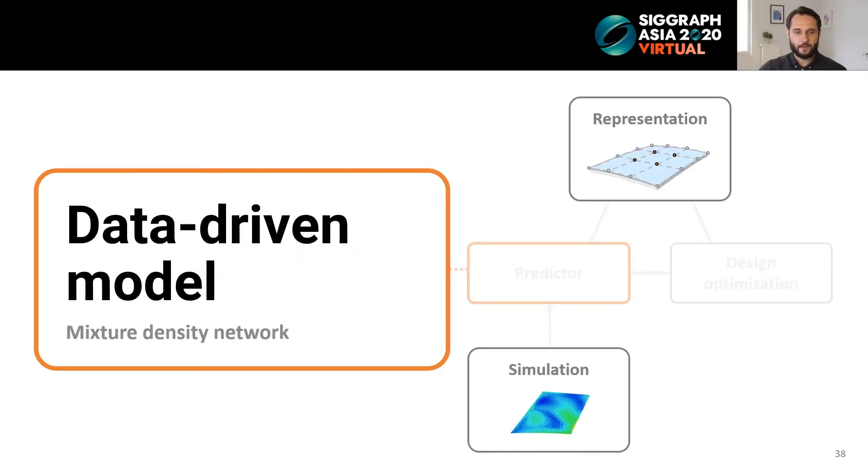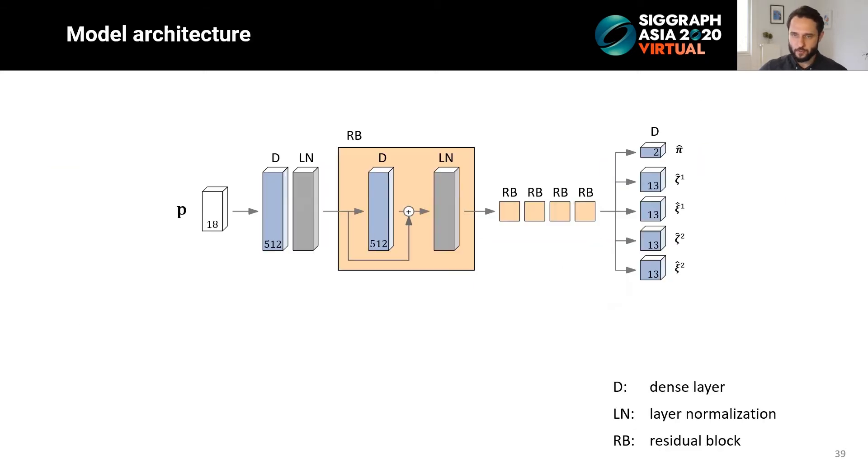Thank you, Ruslan. To accurately capture the design space of cold-bending glass panels, we need to allow our data-driven model to explicitly handle multiple shapes. To this end, we use a mixture density network, which is a multi-modal regression model.